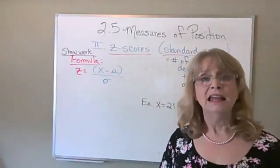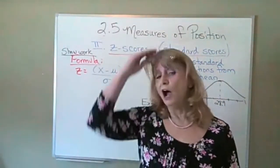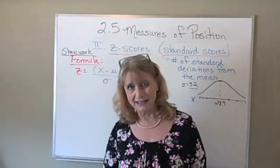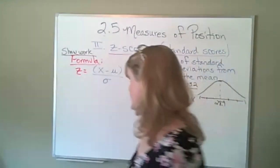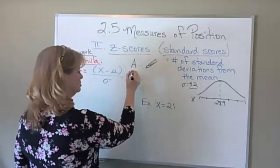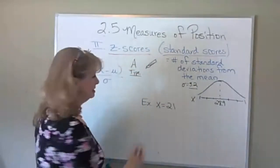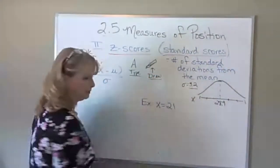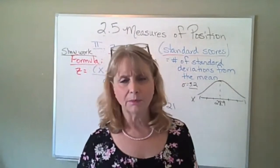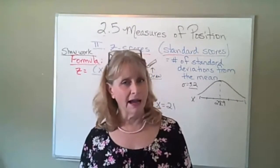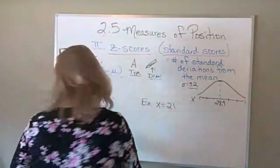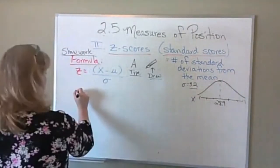Now x = 21. For part A, I want to show the work for calculating the z-score. We can see 21 would be way to the left — smaller than the mean. Always write z equals every time, even when practicing on homework. Write the formula, then rewrite z equals and substitute the values. If you label things, it makes everything so much easier.